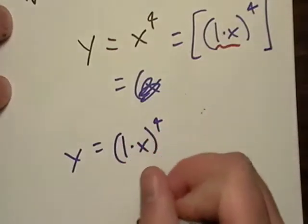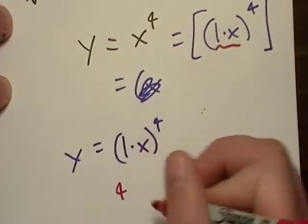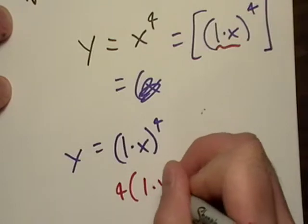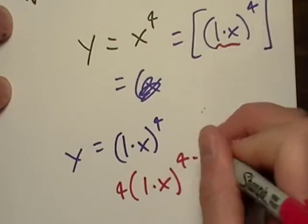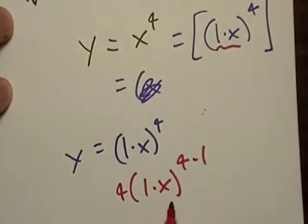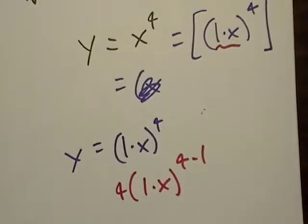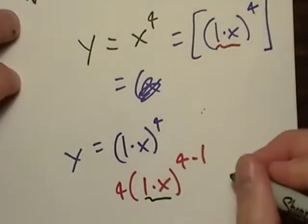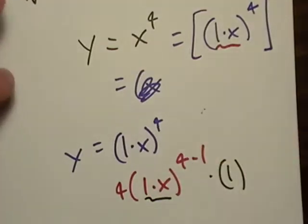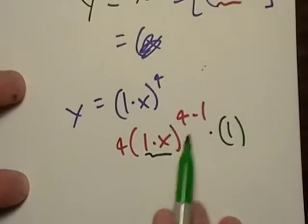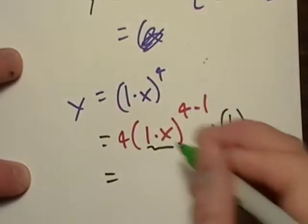Well, we know the formula is going to be four. Then we're also going to go on the inside. We're going to take the derivative of the inside. So what's the derivative of 1 times x? Well, it's just 1, isn't it? So let's simplify this a little more.